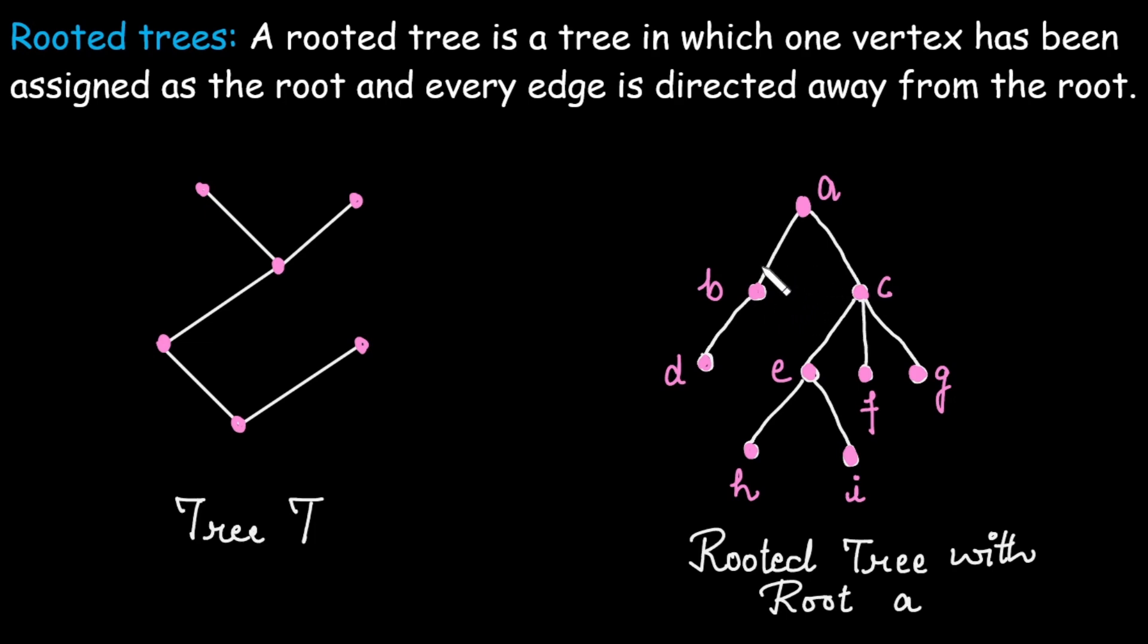Similarly if I say that b is the root, all the edges would be considered directed away from b. The same rule is applicable for any other vertex if we choose it as the root.